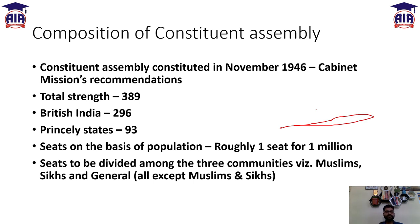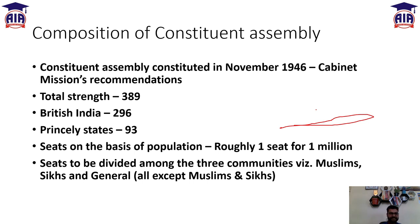India was divided into two parts: British India under direct British rule, and the Princely States. The total number of seats was 389 - British India had 296 seats and Princely States had 93 seats.